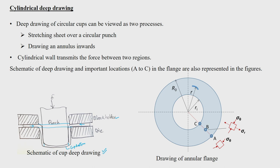After the cup bottom forms, the entire process is about converting the flange region into the cup wall. This is your cup wall region, and this is your flange region. Once the cup bottom is formed — that can form with just about 1 mm of punch movement — after that your cup wall will form due to the inward movement of this flange.